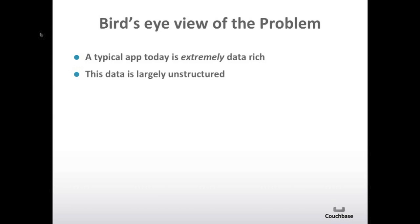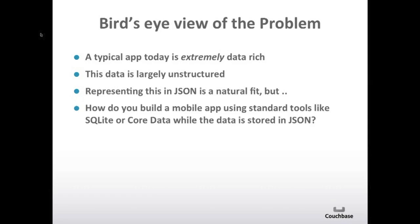If you wanted to try to fit this data into a structure such as a relational structure, it's actually probably more work than just leaving it in its natural structure. And JSON is perfect for this, to model that natural structure — but then you run into the problem of how do you build a mobile app using standard tools like SQLite or Core Data when you've got all your data stored in JSON.